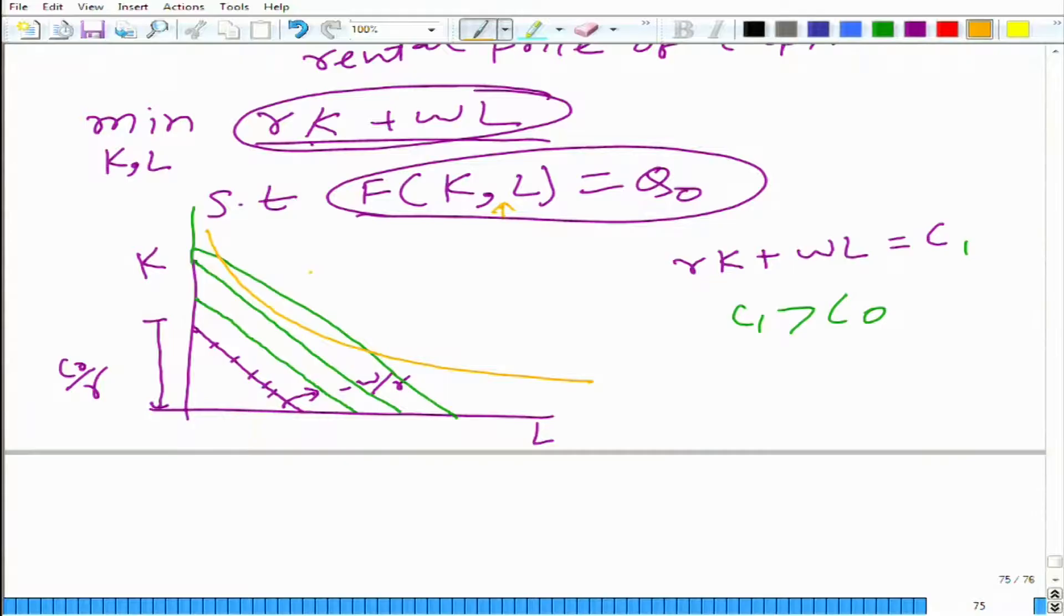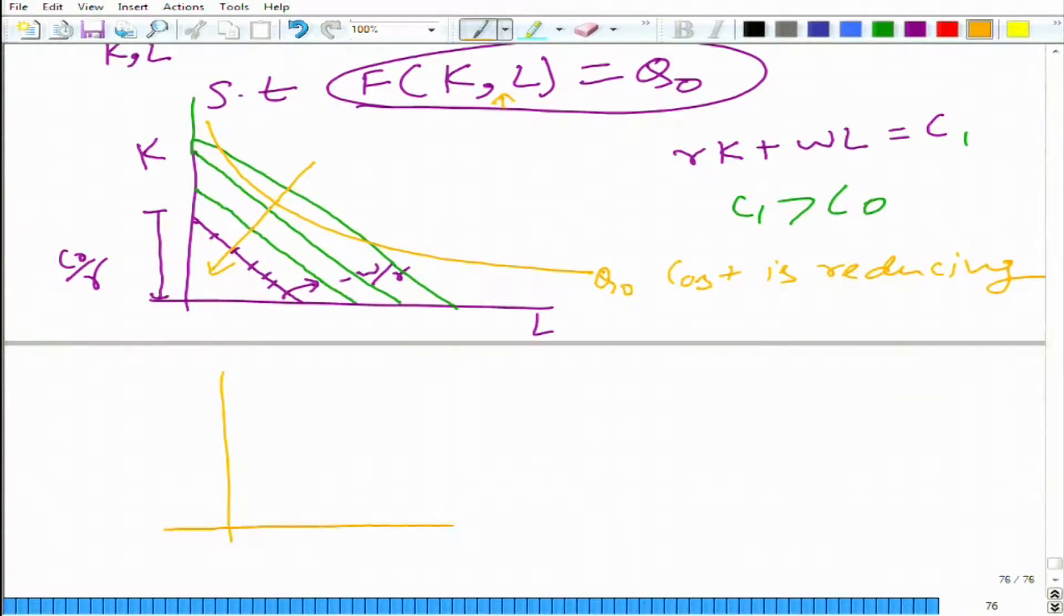Now the idea is very clear. If you look at the isocost map, if you move in this direction, what is happening? Cost is decreasing or reducing. And what is our aim? Our aim is to produce at least q₀ amount. Same logic: let's say this is the isoquant and this is the isocost. Of course these two lines are not parallel, but does not matter. This is different. Here we cannot have cost minimization at this point. Why? Because we can move in this direction and still be able to produce q₀ at the lower cost.